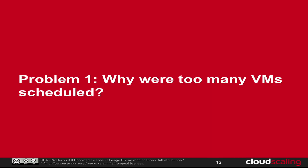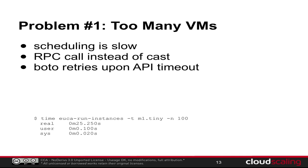The first problem: why are too many VMs scheduled? We tried launching a thousand and got more than a thousand. This happens for three basic reasons. The scheduling is slow. There's an RPC call instead of cast — a call means the API waits for a return code from the scheduler, so if the scheduler is slow the API won't respond until scheduling is finished. And Boto, the Python library for EC2 that works with OpenStack, retries upon an API timeout.